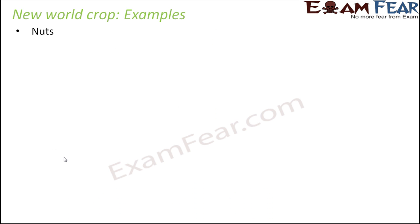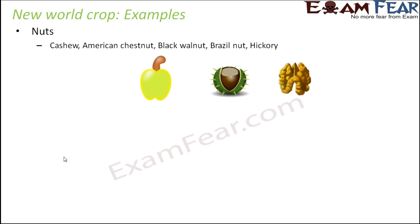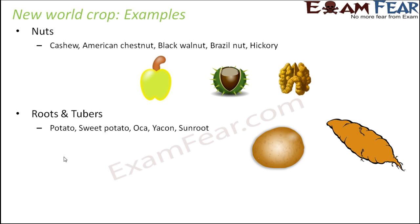Similarly, talking about nuts, many nuts like cashew, American chestnut, black walnut, brazil nut, and hickory are all examples of nuts which were new world crops. For roots and tubers, potatoes, sweet potato, ocha, yacon, and sunroot are all examples of new world crops again.